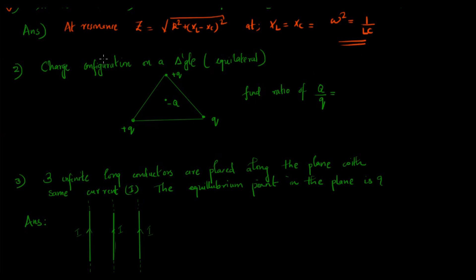The second question is about a charge configuration in an equilateral triangle. We need to find the ratio Q/q, where capital Q is at the center of the triangle. By drawing the appropriate forces on the charge −Q and equating all the resultant forces, you get the answer as Q/q = −1/√3. That is the correct answer for question 2.